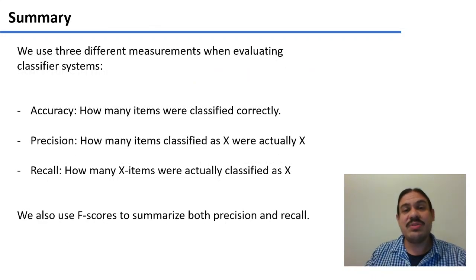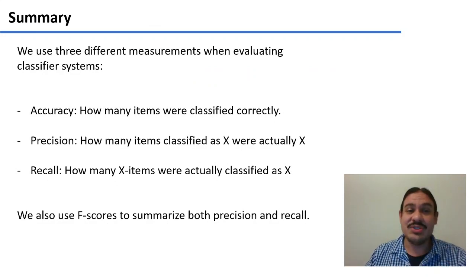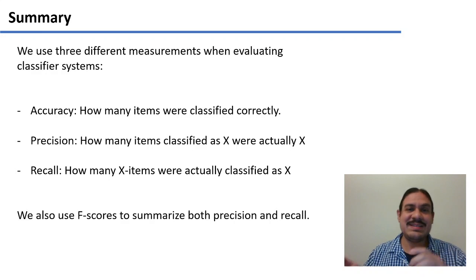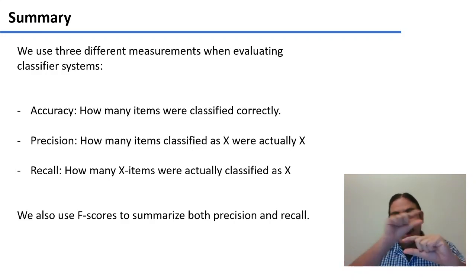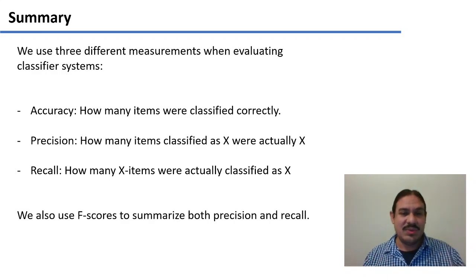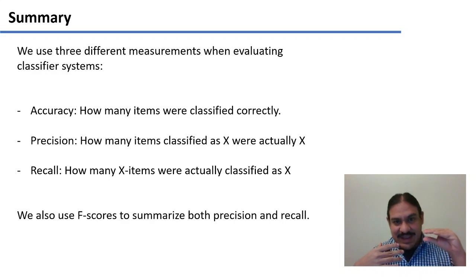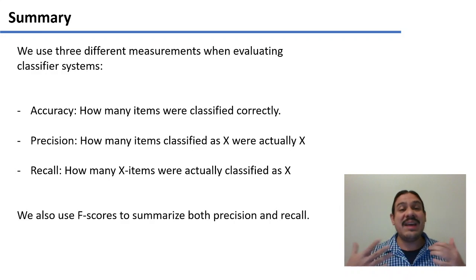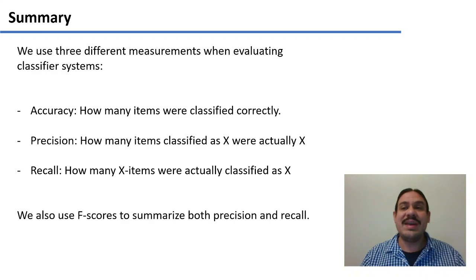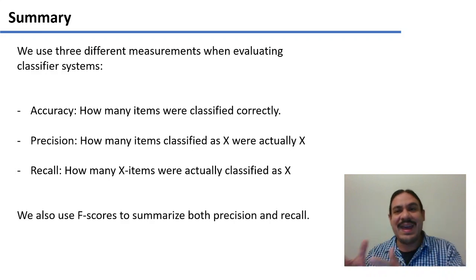So in summary, we use three different measurements when we evaluate classifier systems. We use accuracy — just how many items are classified correctly. We can use precision — how many of the items classified as category X are actually X? And we use recall — how many of the items of category X did we actually classify as X? We can also use F scores to summarize both precision and recall. In our next video, we're going to look at an example with code of how to put everything together: a classifier and its performance evaluation.